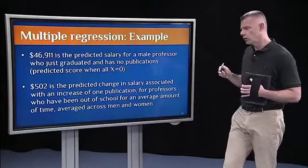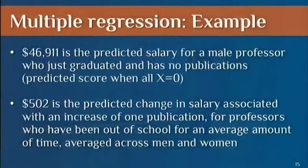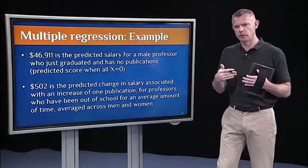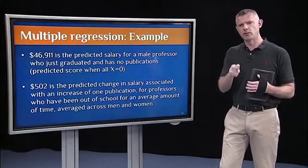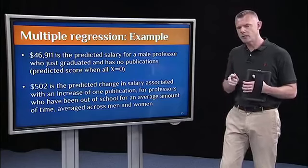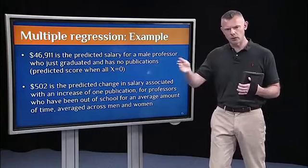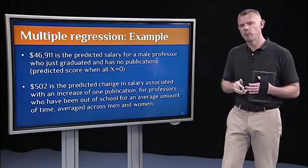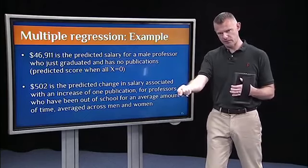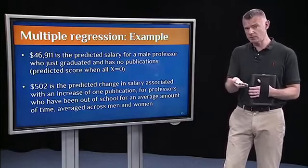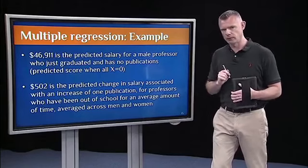What's 502? Well, 502 was the regression coefficient for publications. So you might say, well, okay, that's for a one unit increase in publications. That's the predicted change in salary. And that's almost right. Because that's what we learned in simple regression, right? The regression coefficient is for a one unit increase in X, it's the predicted change in Y. But what you have to remember in a multiple regression is that there are other variables floating around in this model. So it's the slope relating publications to salary, yes, but it's the slope at the average level of time since PhD and averaging across men and women. So it's taking into account those other variables in your model, which can get tricky and fool you if you're not careful in interpreting the regression coefficients.